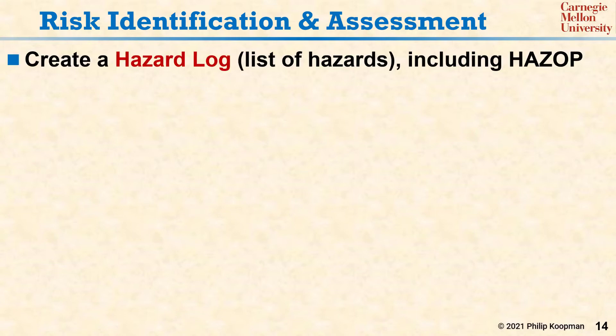The first piece is to create a hazard log — simply a list of all the hazards for your project. The list can be started by using hazards from previous similar projects. It can be expanded via a structured analysis technique called HAZOP, which involves modifying the requirements with guide words to see what happens if things go in an unexpected way. It can also be expanded via project experience and, in fact, is a living document that is updated over the course of the life of the product. The result is a list of hazards that might be a problem.